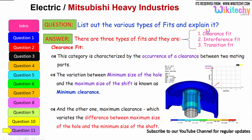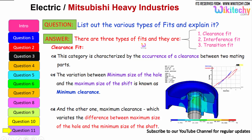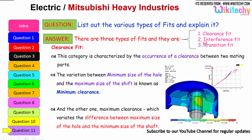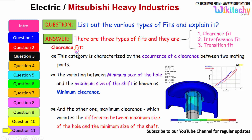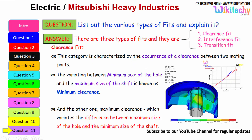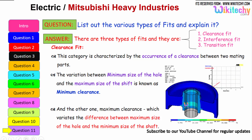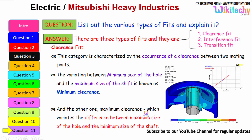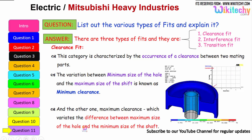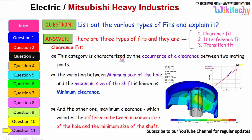List the various types of fits and explain them. There are three types of fits: clearance fit, interference fit, and transition fit. Clearance fit is characterized by the occurrence of clearance between the two mating parts. The difference between the minimum size of the hole and the maximum size of the shaft is known as minimum clearance, whereas maximum clearance is the difference between the maximum size of the hole and the minimum size of the shaft.